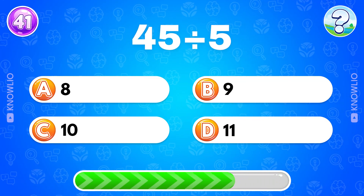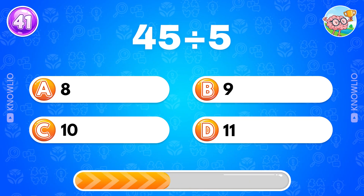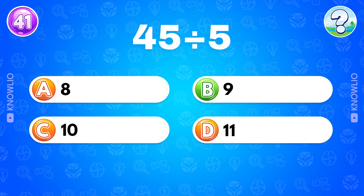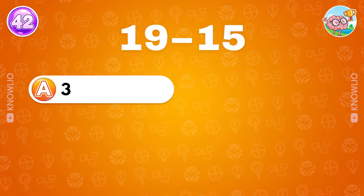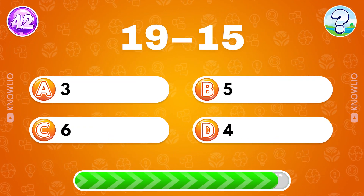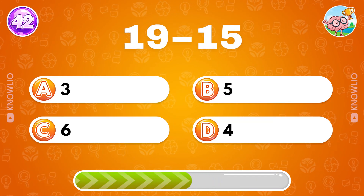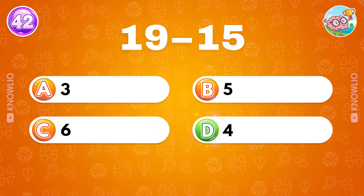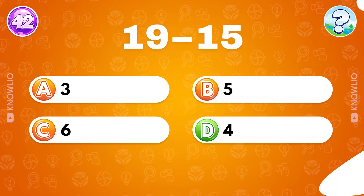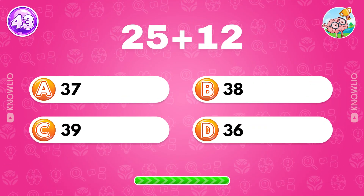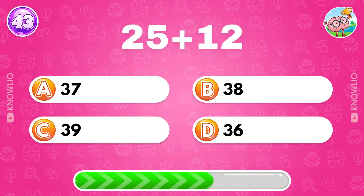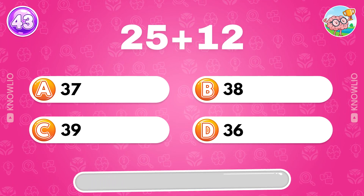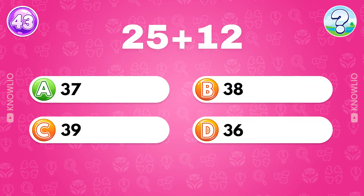45 divided by 5? Answer B: 9. What's the result of 19 minus 15? Answer D: 4. 25 plus 12? Answer A: 37.